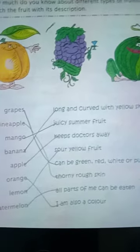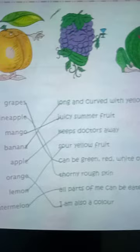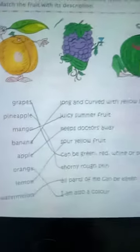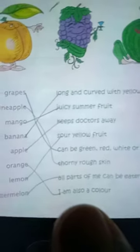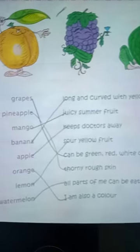Banana means long and curved with yellow skin. Next one is apple — apple keeps doctors away. Next one is orange — orange, I am also a color.